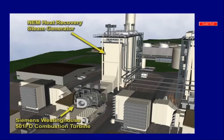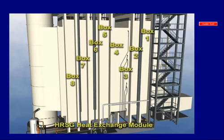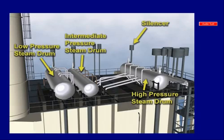Exhaust gases which pass over HRSG tubes provide the heat that is used to either produce steam or to superheat steam. This heat transfer process produces the main steam, intermediate pressure steam, reheat steam, and low pressure steam at the pressures and temperatures required by the steam turbine.